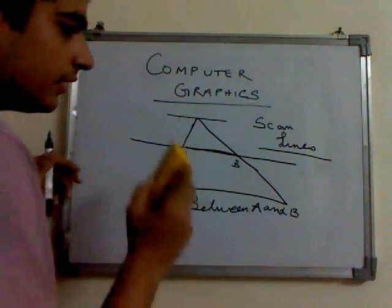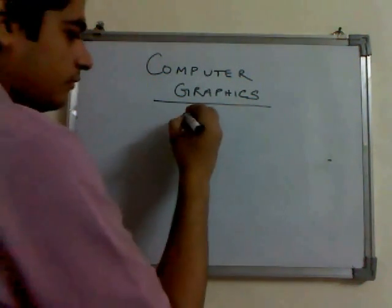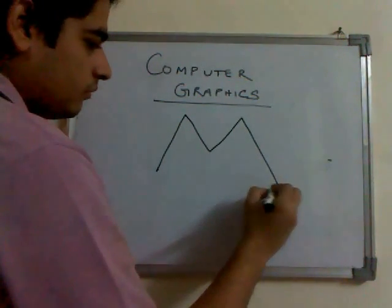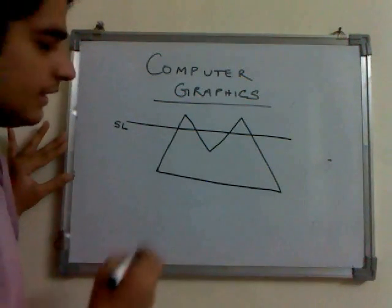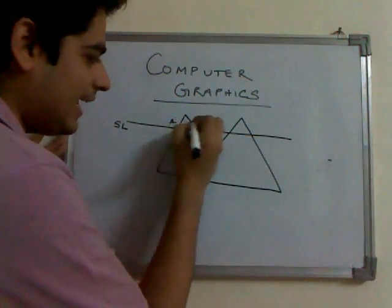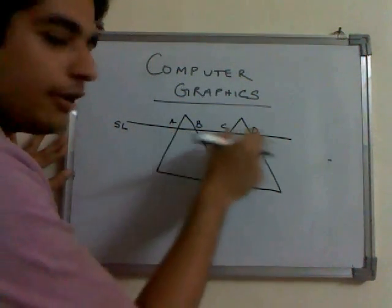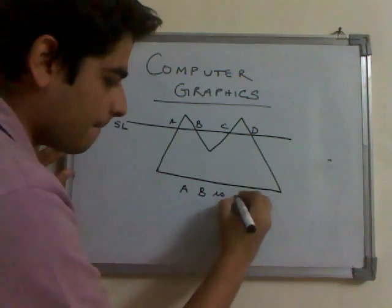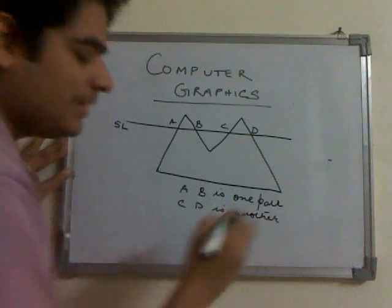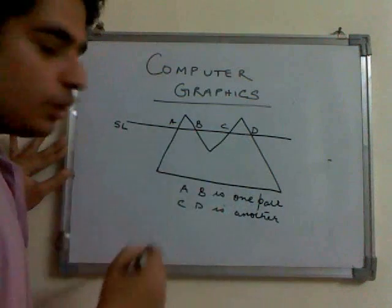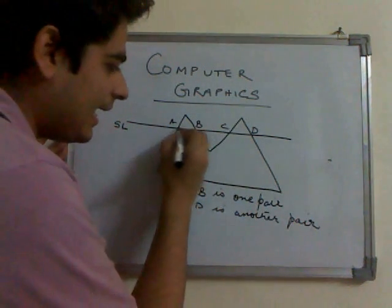Now let me take another, more complex diagram. This is the scan line. The scan line intersects with four edges at four different points: A, B, C, and D. Now we color the alternate pairs of points. A and B is one pair, C and D is another pair. These pairs are formed by the intersection of the scan line with the edges of the polygon, and then we color all the points between A and B, and between C and D.